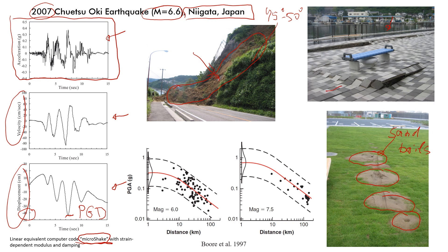This is the damage to the pavement — the tiles. There was some displacement, lots of change in displacement in both the horizontal and vertical direction, so this actually cost a lot of money to fix. So let's go back to this chart.